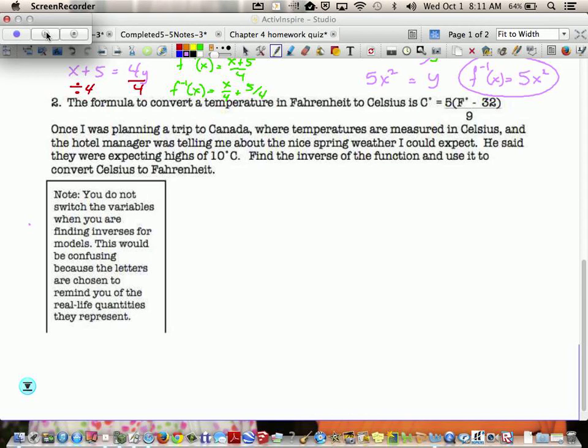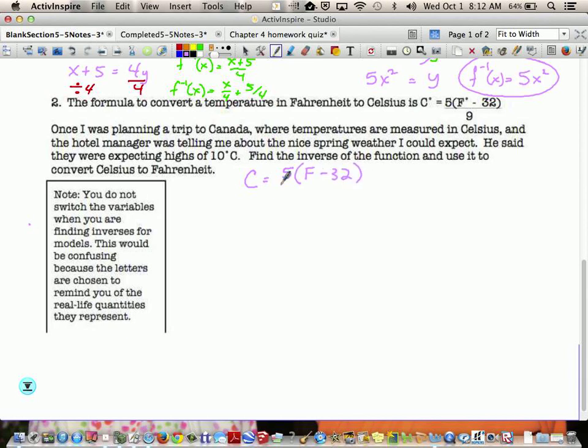Now, the note says when you are doing quote-unquote real-world applications, do not flip-flop your variables. Don't flip-flop them here because that will mess things up. The C's become F's and F's become C's. It doesn't make sense. So all we're going to do is take that equation and solve for F.